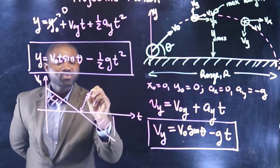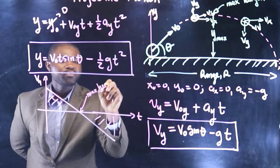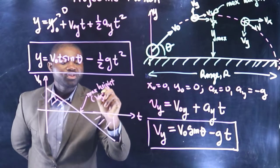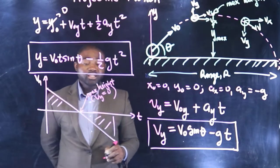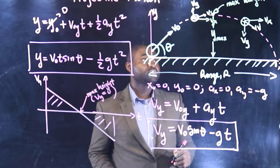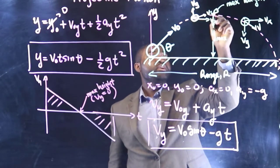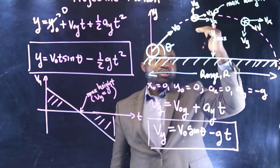This is the maximum height. At maximum height, vy is equal to 0. And that makes a lot of sense. So you should take note that at maximum height right here, the velocity...